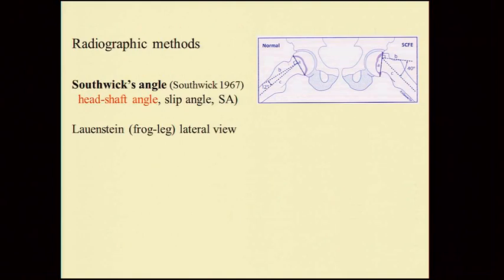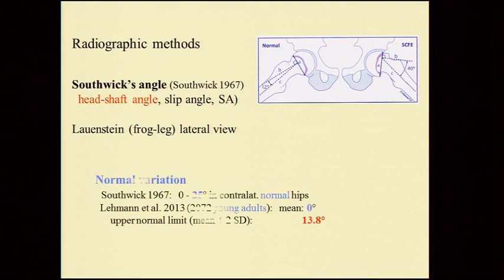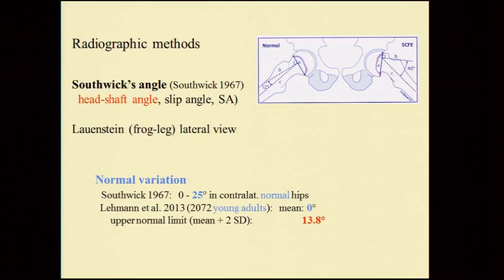Regarding radiographic methods, the slip angle was described by Southwick in 1967, measured on the Lowenstein frog leg lateral view — also called the head shaft angle or slip angle SA. Southwick found a variation from 0 to 25 degrees in normal hips. In a large study from Norway of more than 2,000 adults, the mean slip angle was 0 degrees, and the upper normal limit, defined as mean plus 2 standard deviations, was 14 degrees.